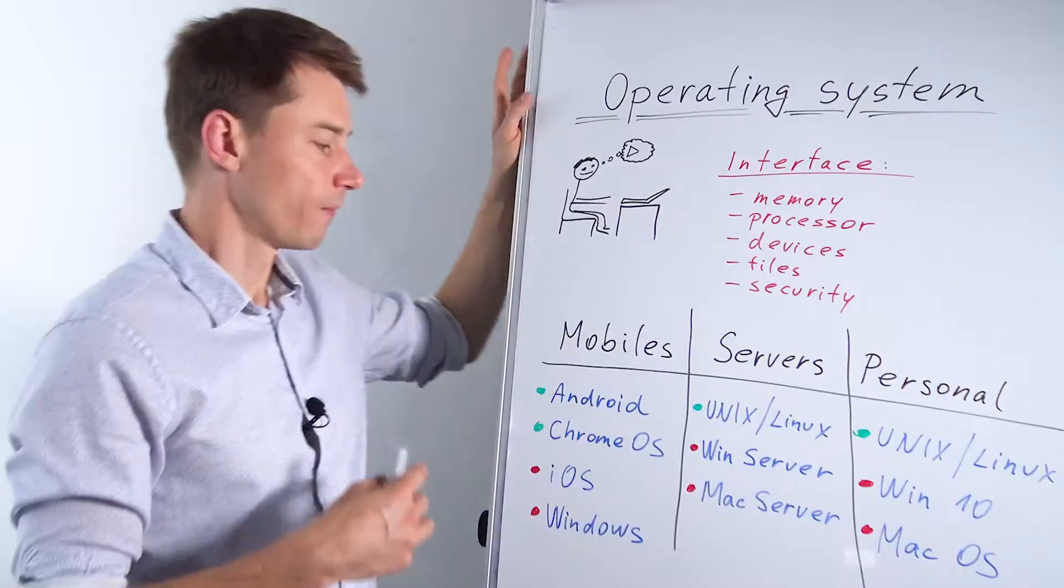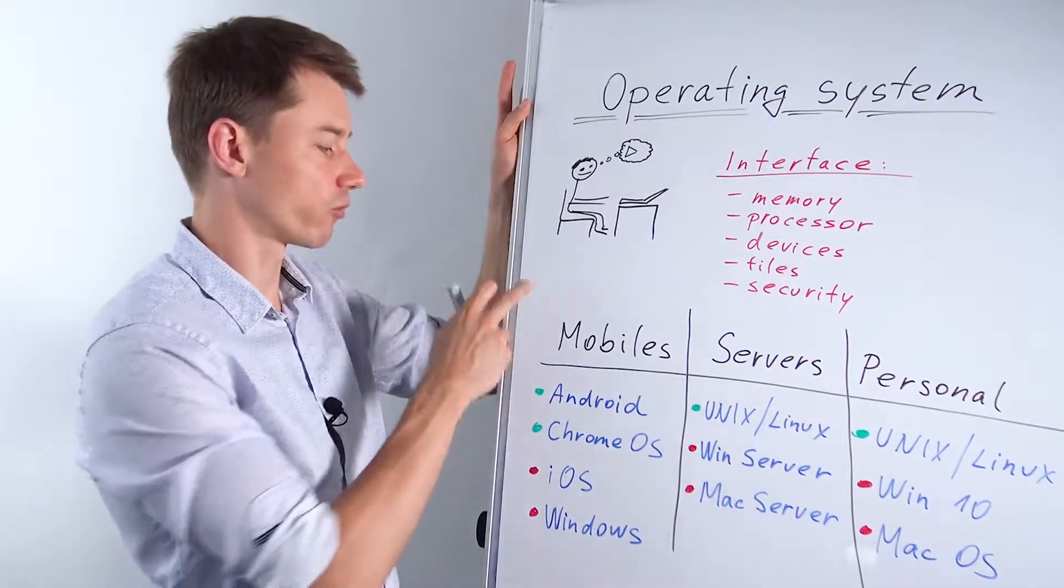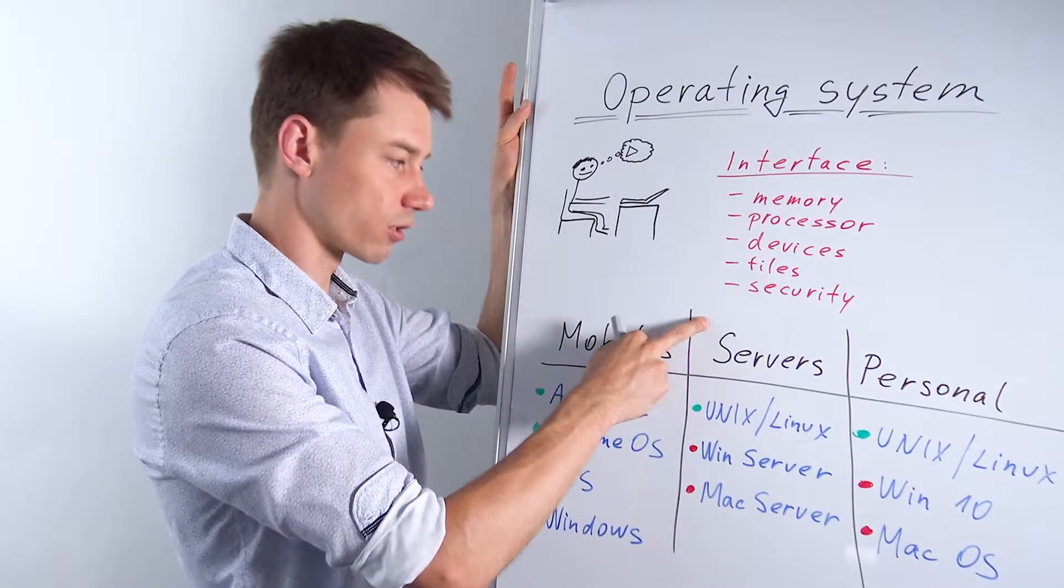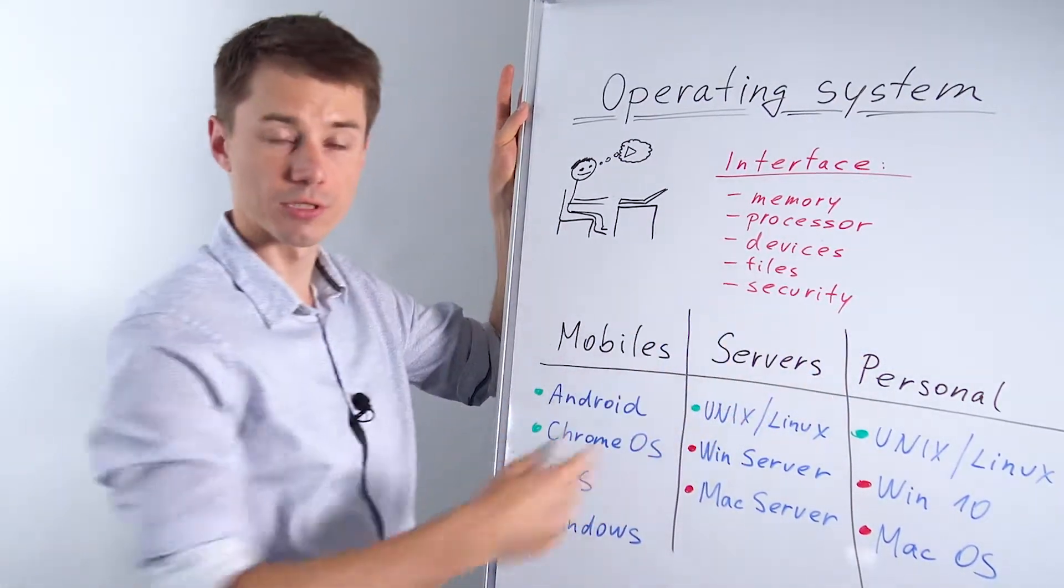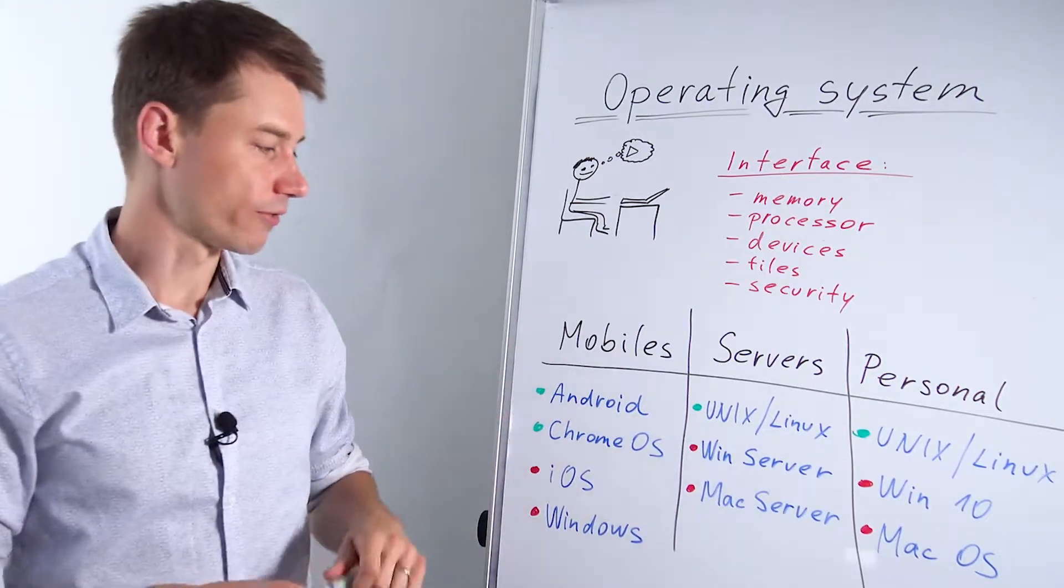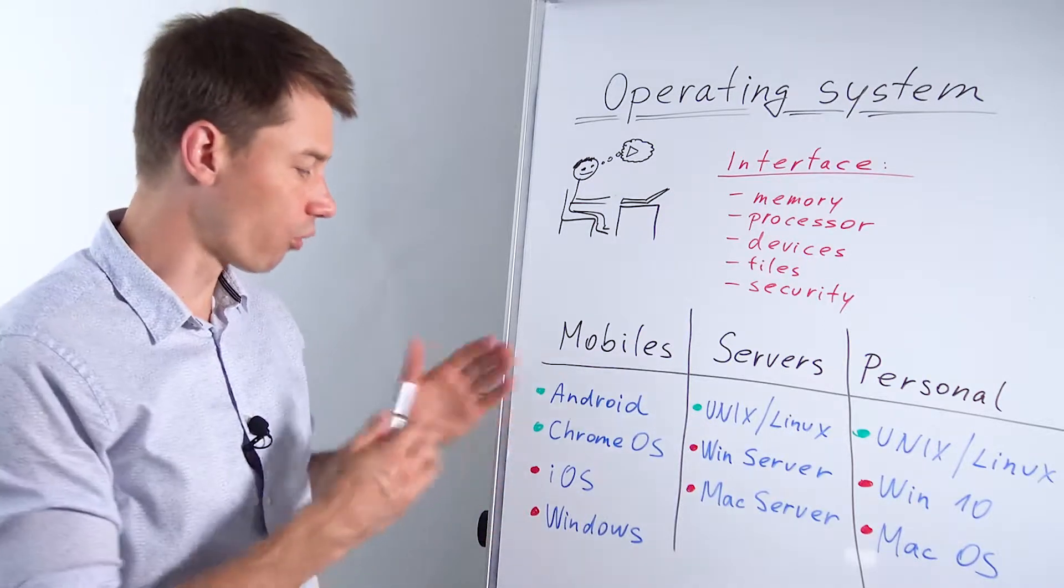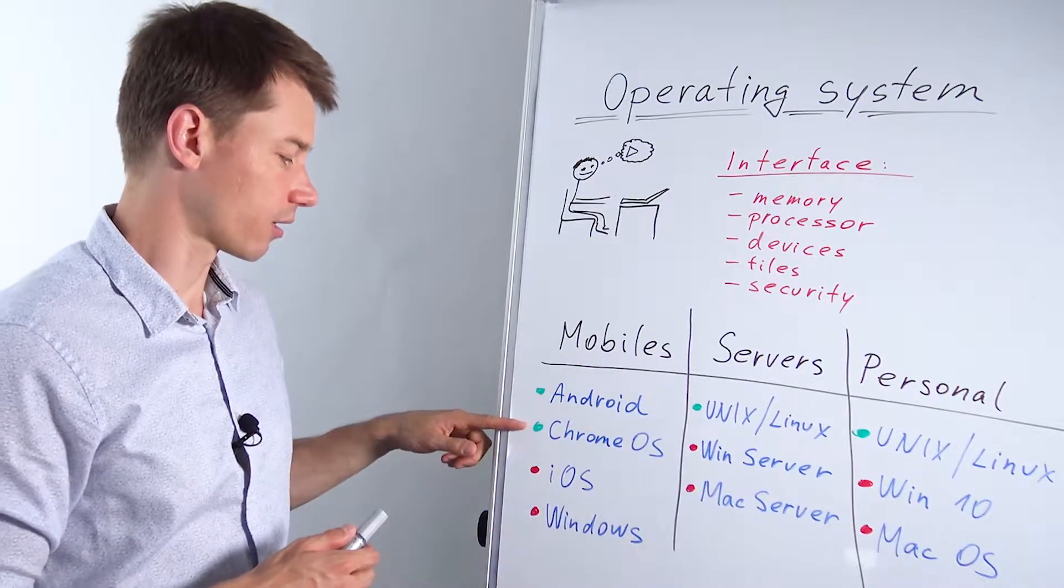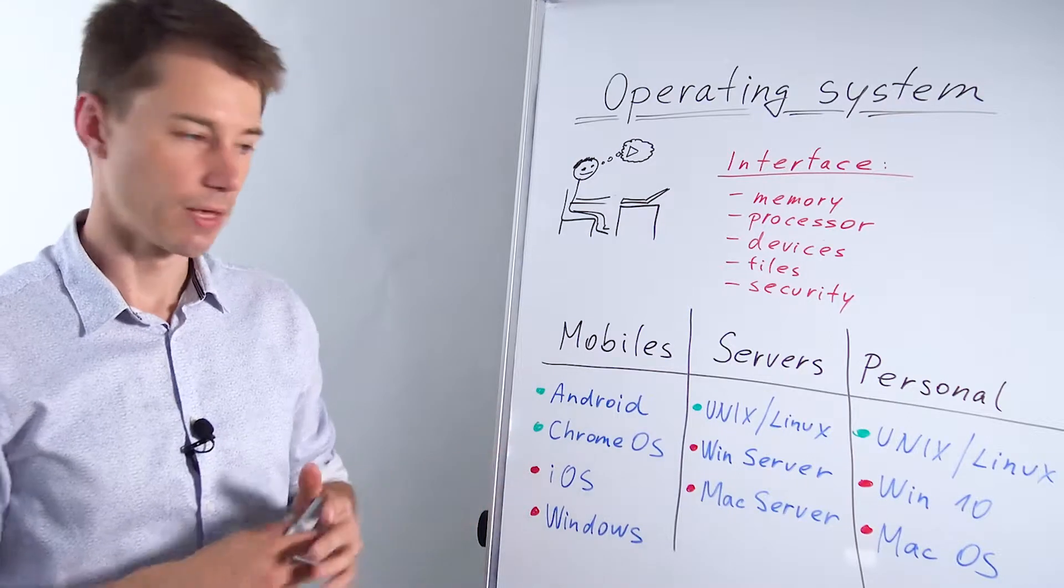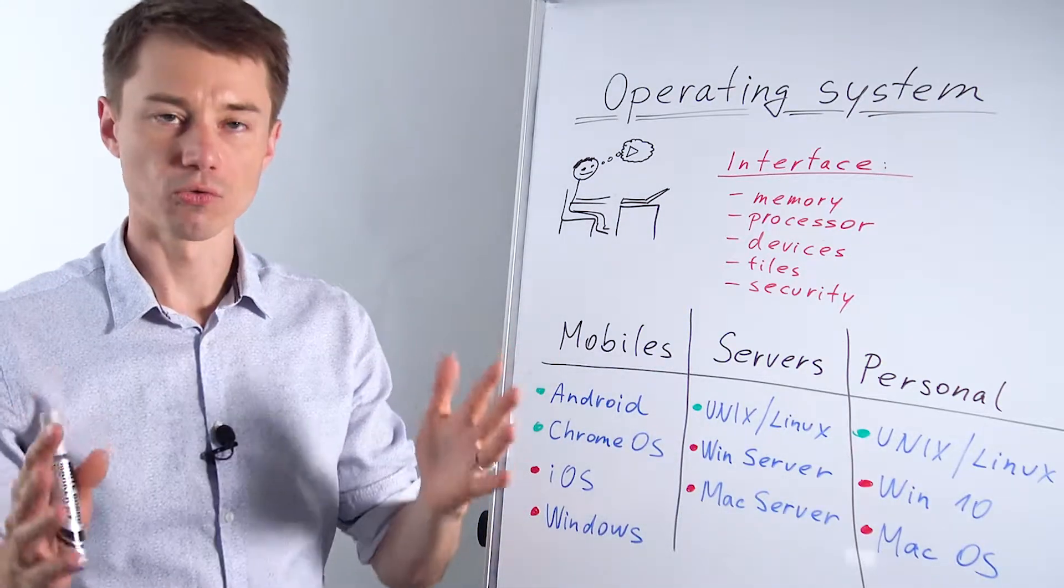So you need an operating system and there are a few types of operating systems. Some of them are good for mobiles, some of them are good for servers, some of them are good for personal use. I'm sure you've already heard about most of these, maybe not Chrome operating system, but it's always good to have this as a little reminder and see what they have in common and what are some major differences.